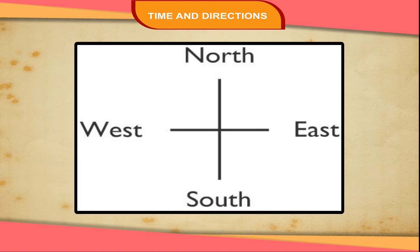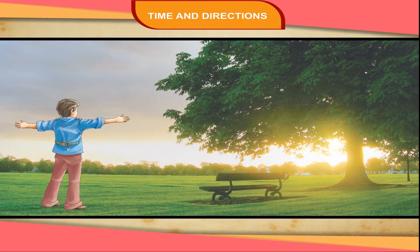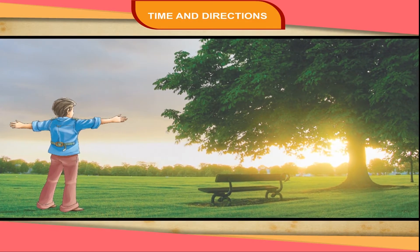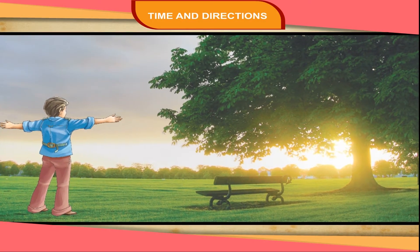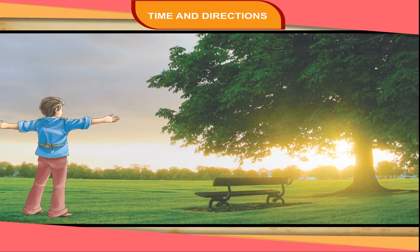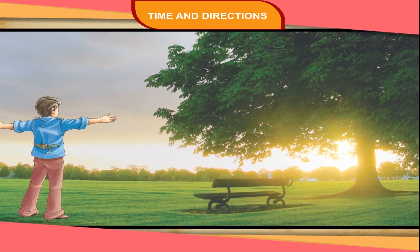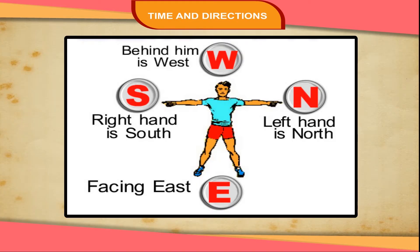But how can you know these directions? Let us do an activity. Stand facing the sun in the morning. Now, stretch your arms as shown here. On your front is the east. Behind you is the west. To your left is the north. To your right is the south.